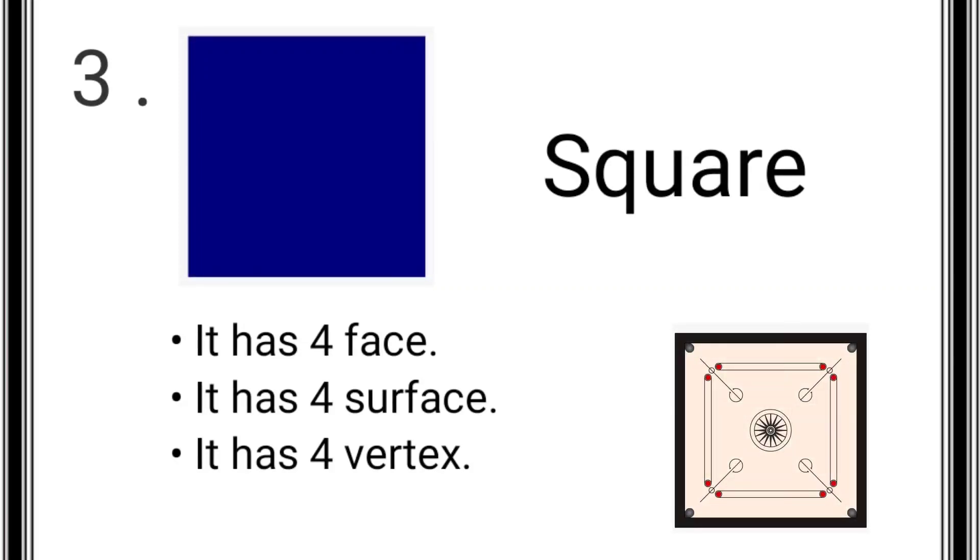The next shape is square. A square has four faces, four surfaces, and four vertices. Example: carrom board.